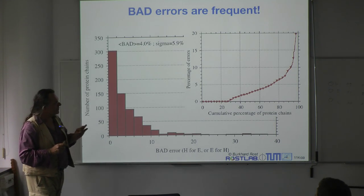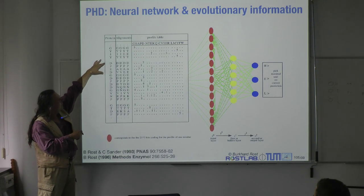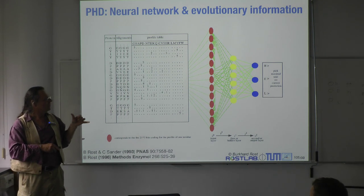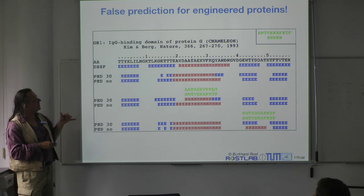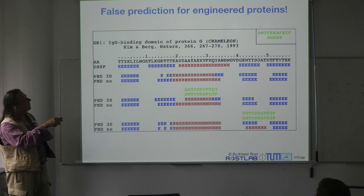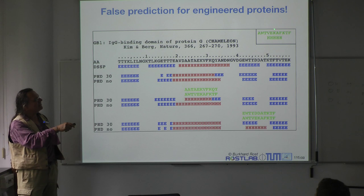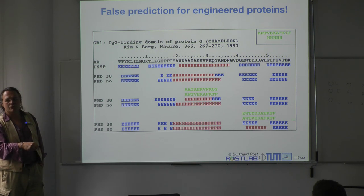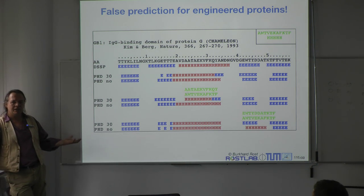Let's look at a different example. The input to that method is a consecutive window of 17 residues that you slide through the protein to predict the entire sequence. What if we looked at a stretch that has two different structural features? This is work from Kim and Burke, published 22 years ago: they engineered 11 residues and put them into one part of the protein where they form a helix, and put the same 11 residues into another part where they form a beta strand.